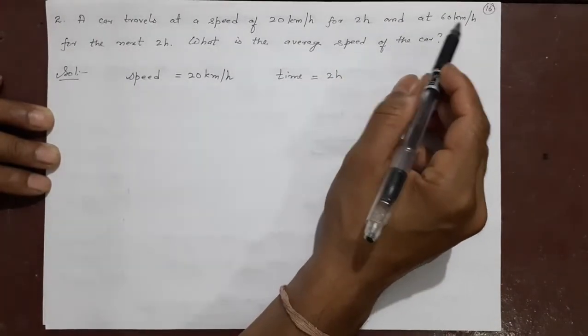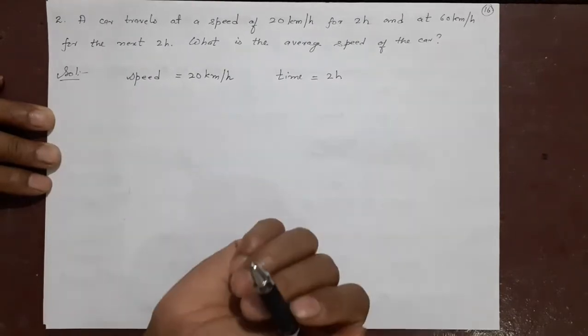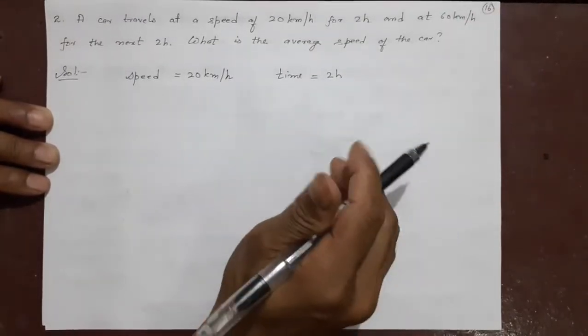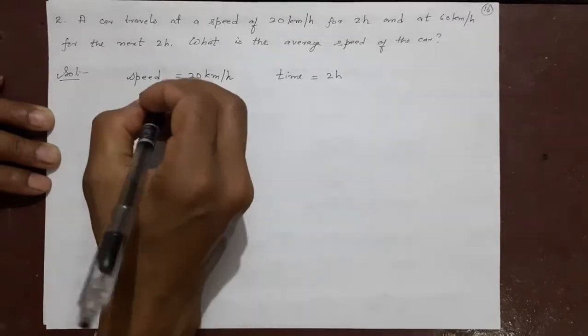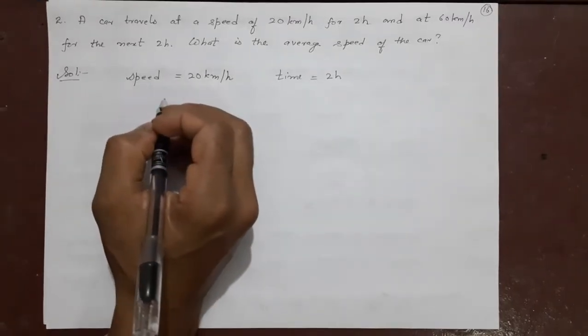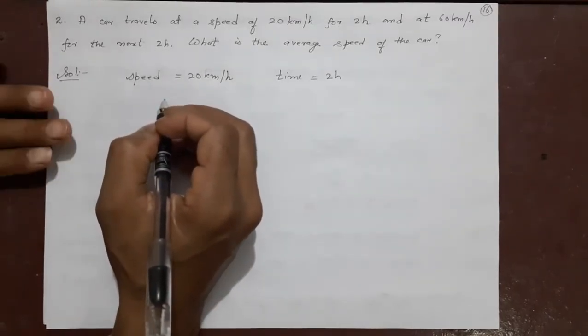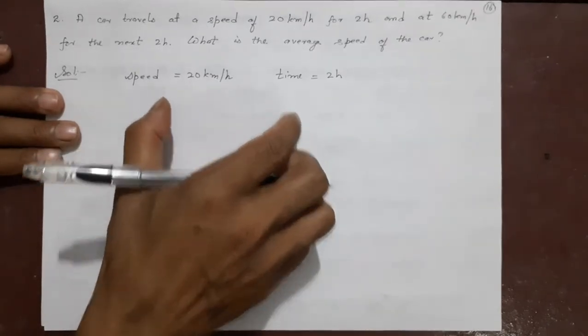And at 60 km per hour for the next 2 hours. After 2 hours, the driver has increased the speed. Different time, different speed will be there. So that is why this question will divide into 2 parts.